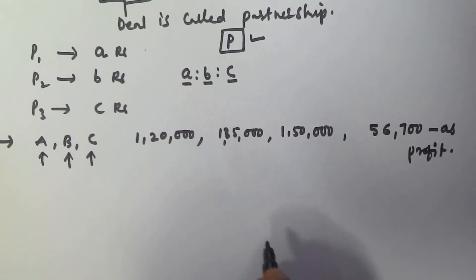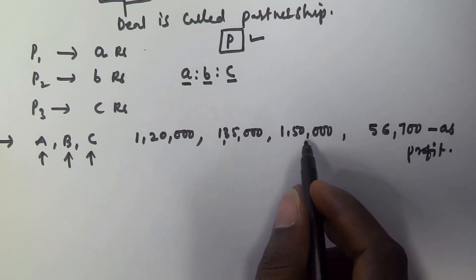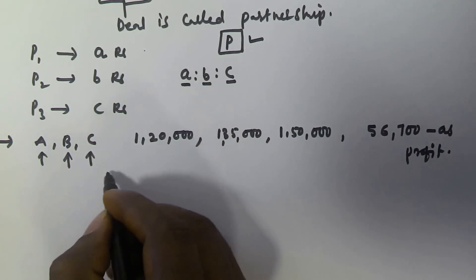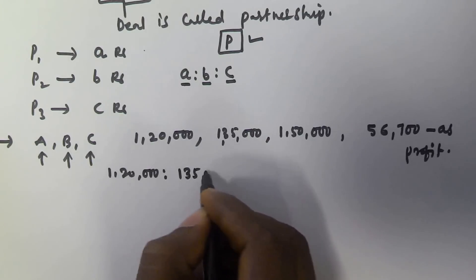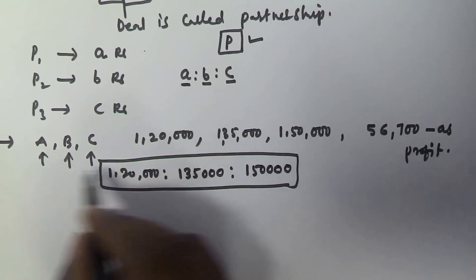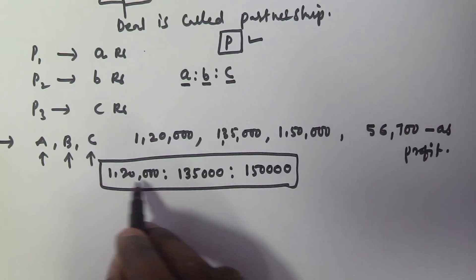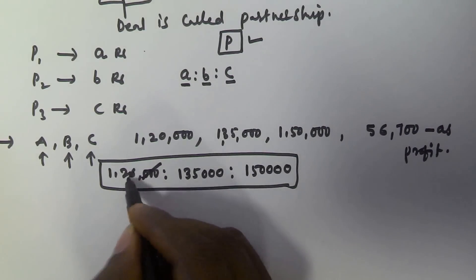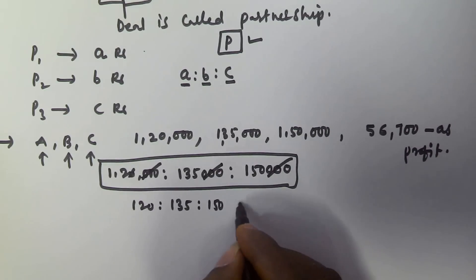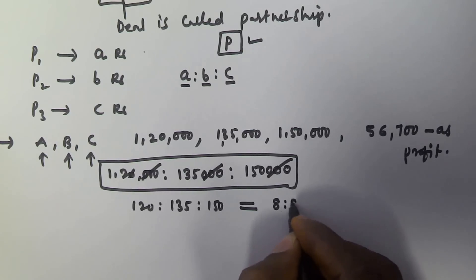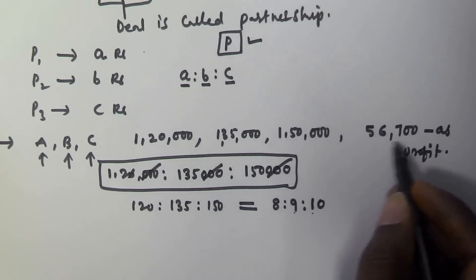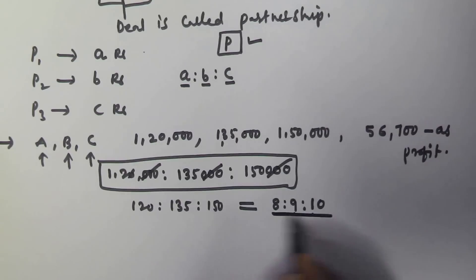Since they have invested one lakh twenty thousand, one lakh thirty-five thousand, and one lakh fifty thousand for the same period, the share is divided in the ratio 1,20,000 : 1,35,000 : 1,50,000. Removing three zeros gives 120 : 135 : 150. Dividing all by 15 gives the simplified ratio of 8 : 9 : 10. So the profit is divided between A, B, and C in the ratio 8 : 9 : 10.